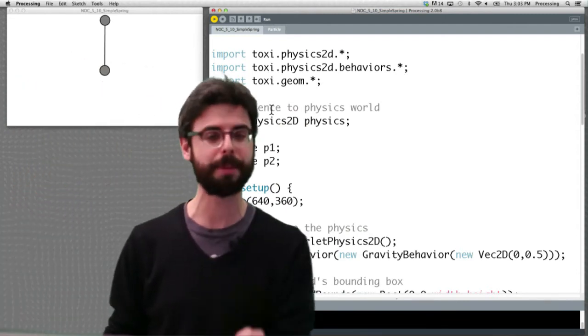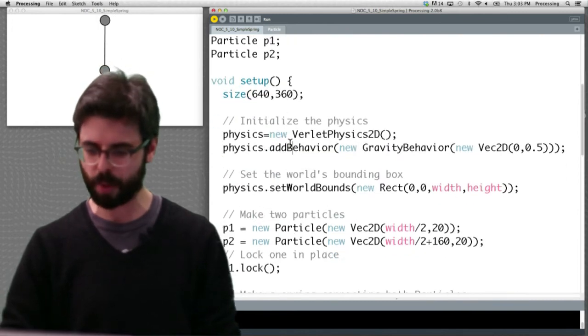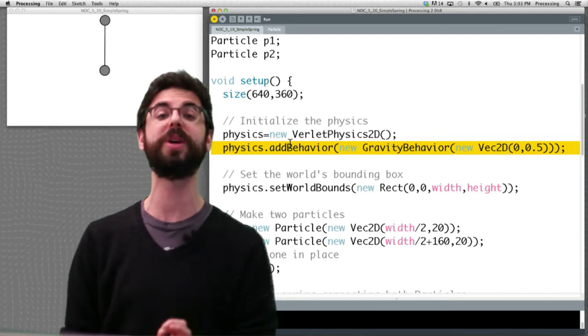That's the world we need to set up. We have two particle objects. Those are our particle objects, but they extend verlet particle 2d. And a couple things I should point out,